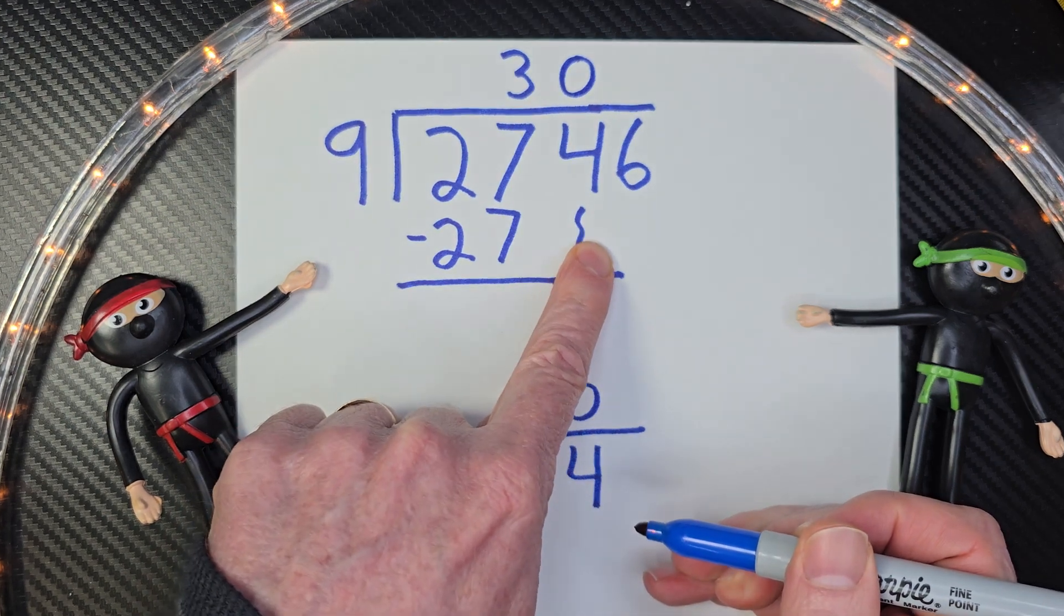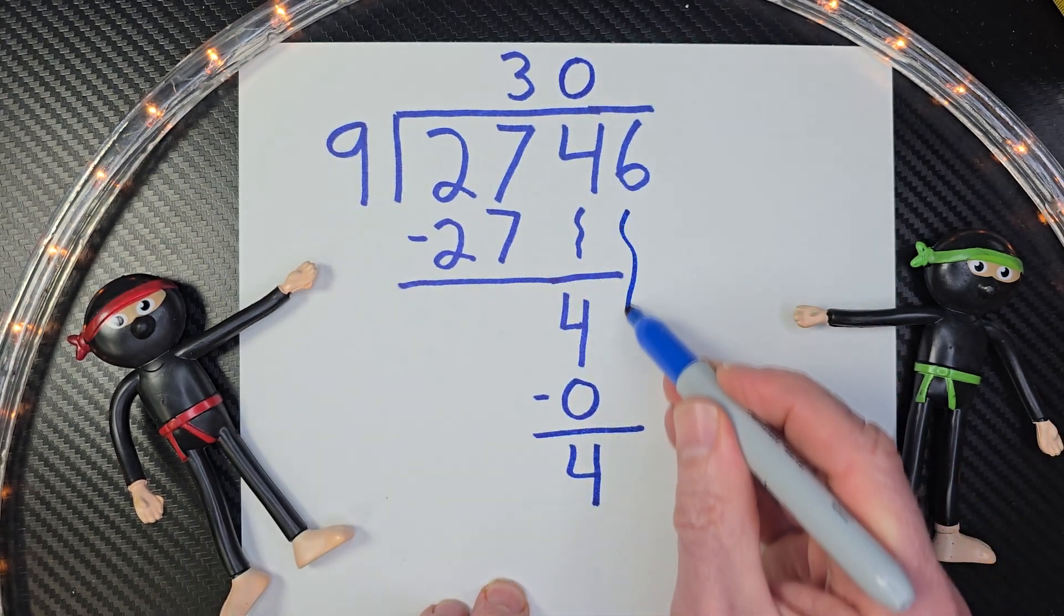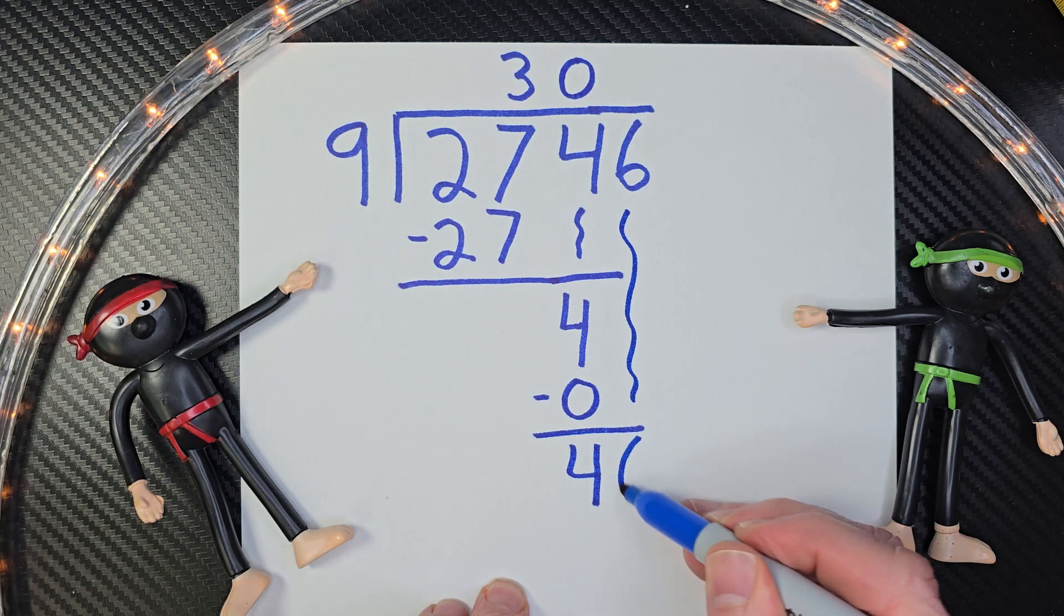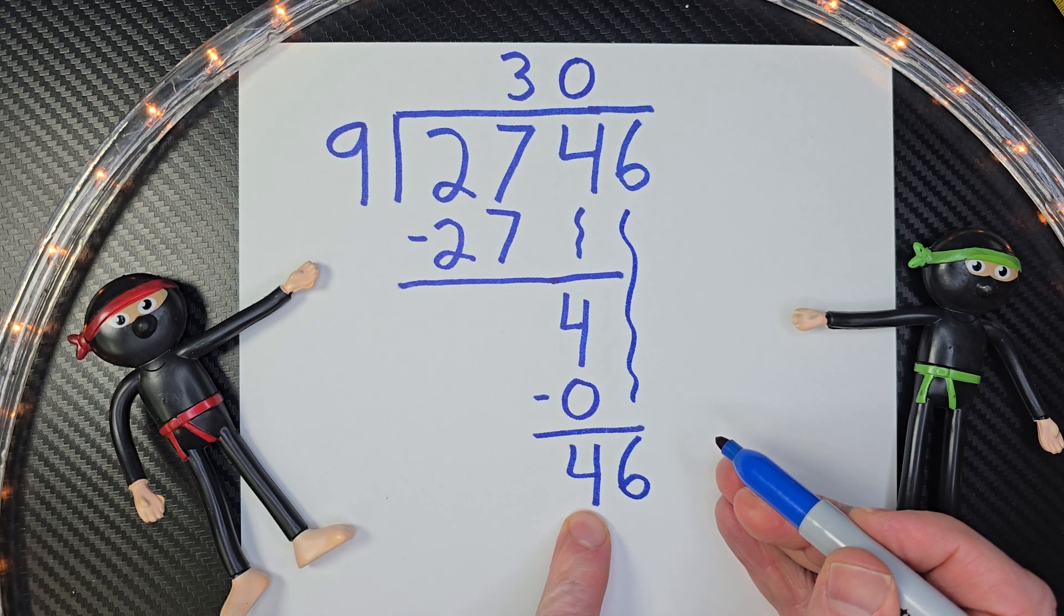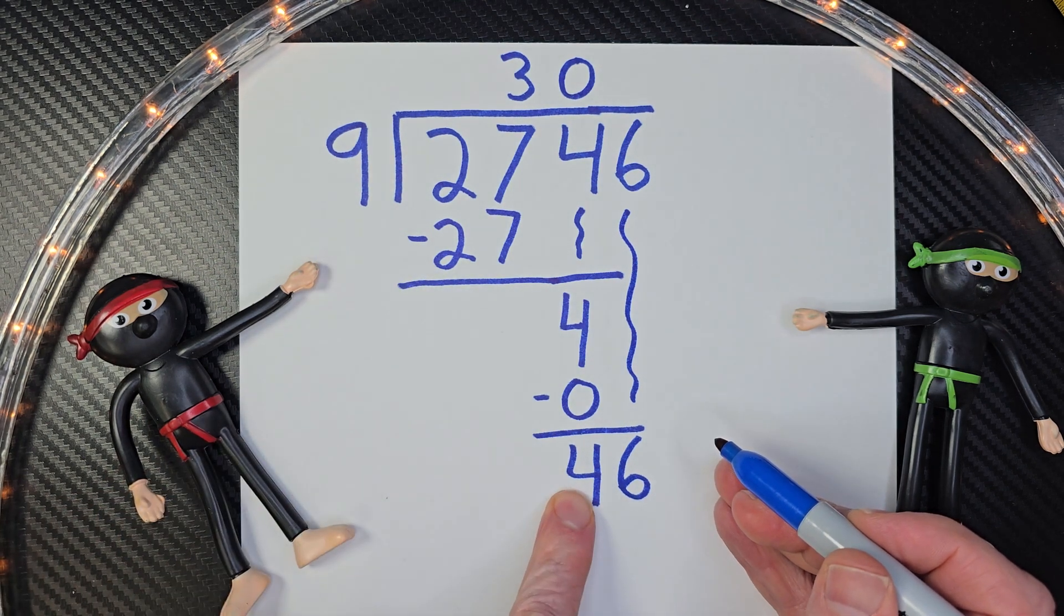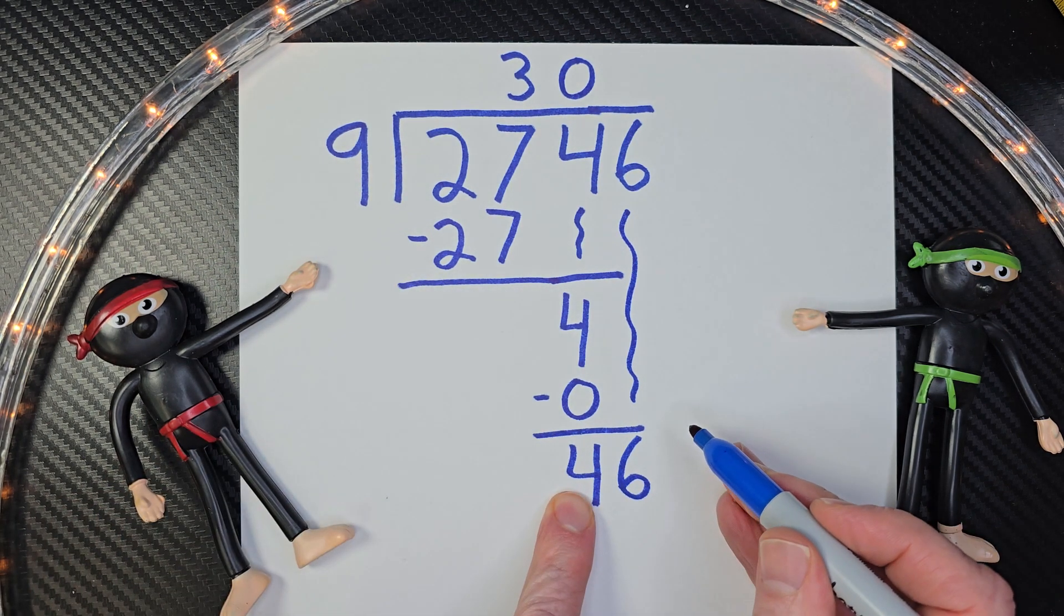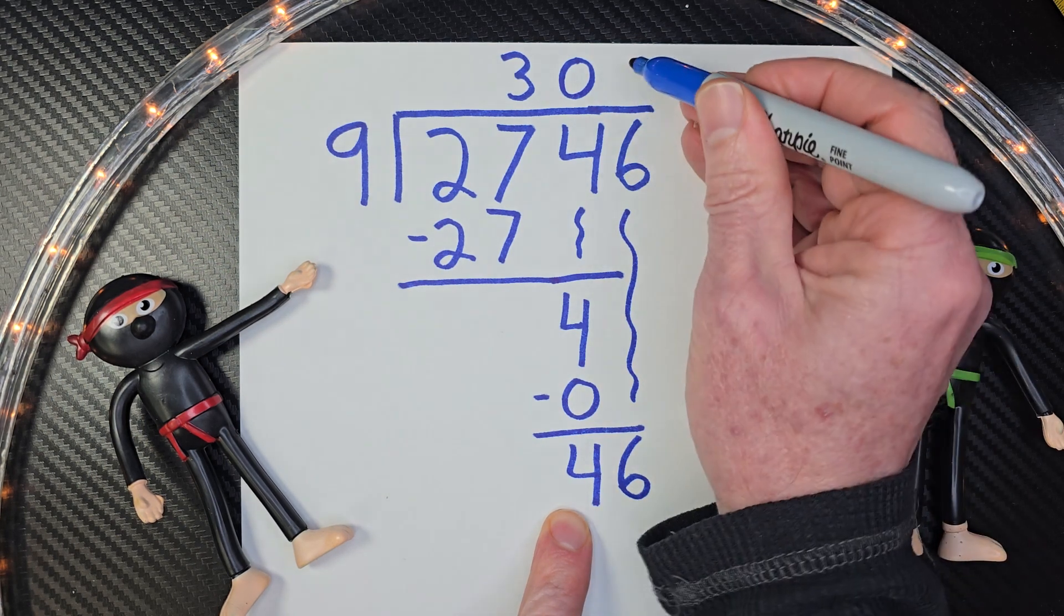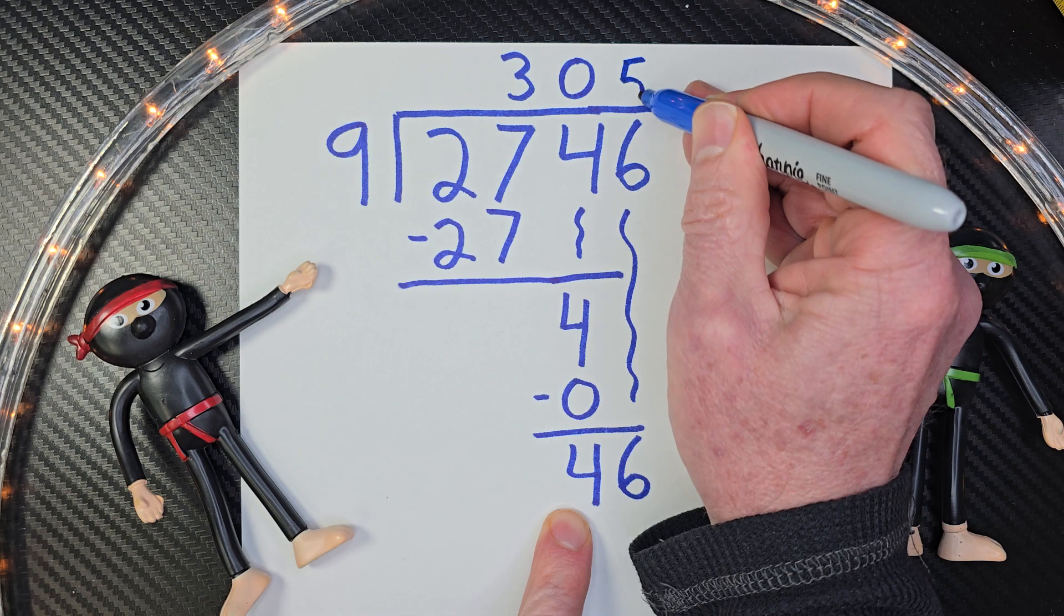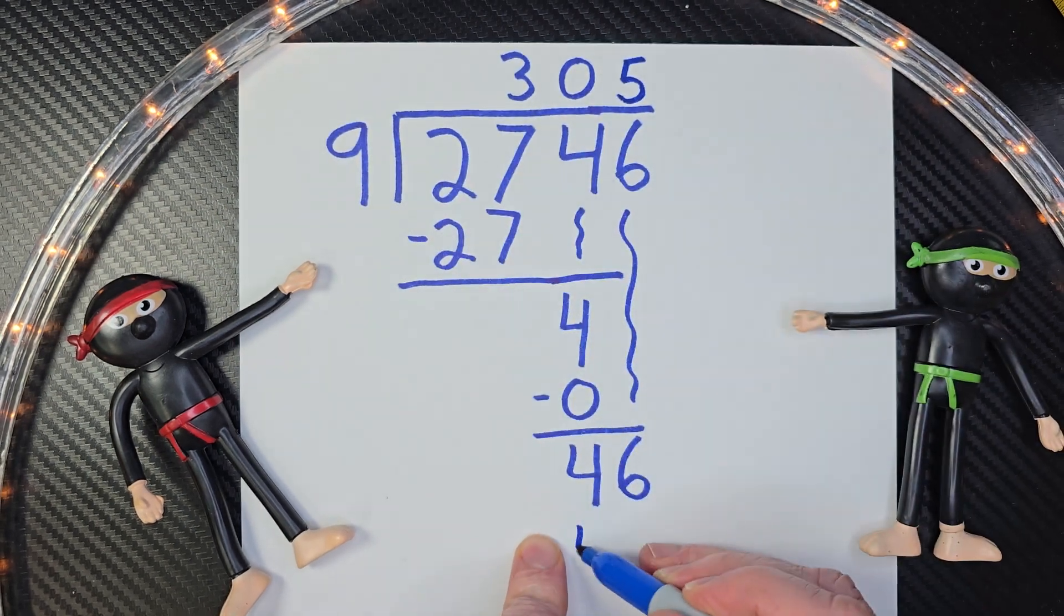Then I can drop the next number down, all the way down to here. So now we're dealing with 46. How many times does 9 go into 46? 9 times 4 is 36. 9 times 5, 45. So I'm going to put a 5 right here. 5 times 9 is 45.